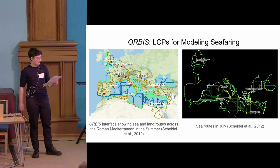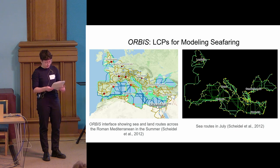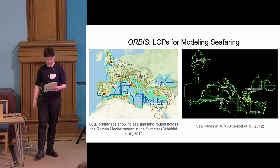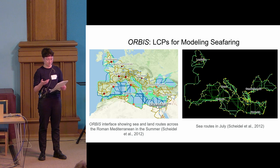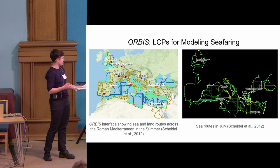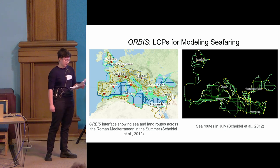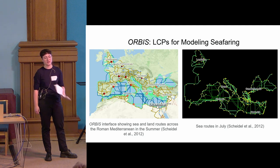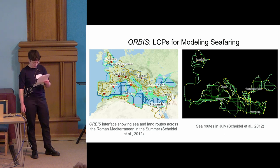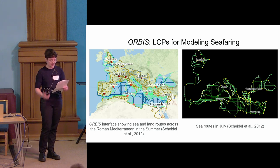There are many limitations to least cost path analysis, and because it is the most popular and longest-standing method, these have been extensively discussed. Firstly, they represent travel in the form of a single static line, which encourages — even forces to some extent — the interpretation that this was always the path taken, regardless of social, cultural, or other factors. This interpretation is heavily subject to environmental determinism; in reality, a whole host of other factors, not least human choice, would have played into the exact paths taken. Additionally, least cost paths lose some of the dynamism of real-life travel.